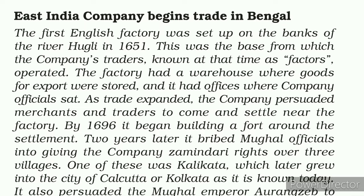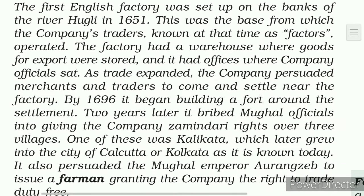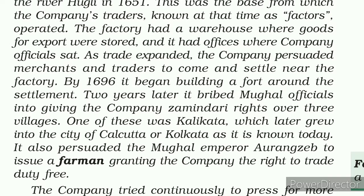The first English factory was set up on the bank of the River Hooghly in 1651. This was the base from which the company's traders, known at the time as 'factors' — not factory but factor — operated. The factory had a warehouse where goods for export were stored, a storehouse, and it had offices where company officials worked.